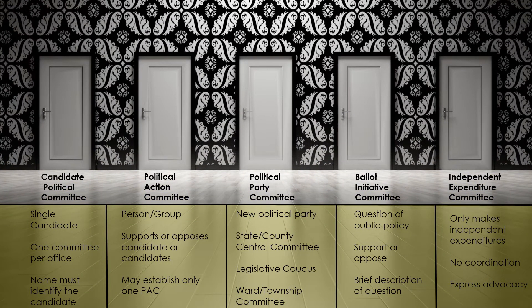Each committee designation is unique. A candidate political committee is, as the name implies, a committee set up by a single candidate. Only candidate committees can contain the name of the candidate within the name of the committee. The committee can support an individual for more than one office, but if the multiple offices being sought are elected during different election cycles, then the candidate must designate the current election cycle to be used for the committee. Additionally, candidates cannot have multiple committees set up to support themselves for the same office. If the candidate sets up multiple committees, one for each different office, then the name of each committee must include the name of the candidate along with the office being sought.